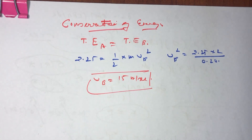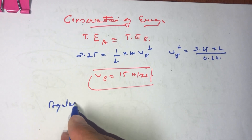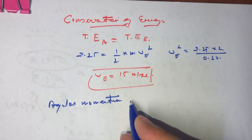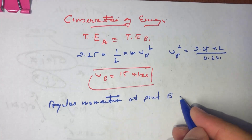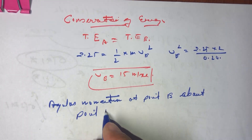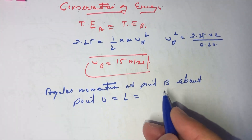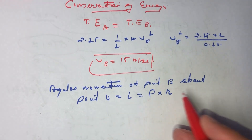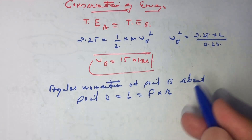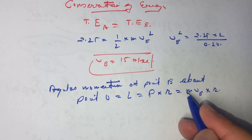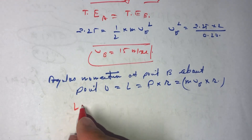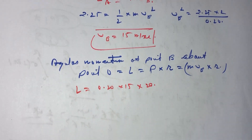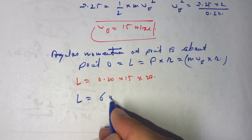Now we find the angular momentum at point B about point O. Angular momentum L equals linear momentum multiplied by r, where r is the perpendicular distance. Here the distance is given as 20 meters, and p equals mass times v_b. Substituting values: L equals 0.20 times 15 times 20, which gives angular momentum equal to 6 kg·m²/s.